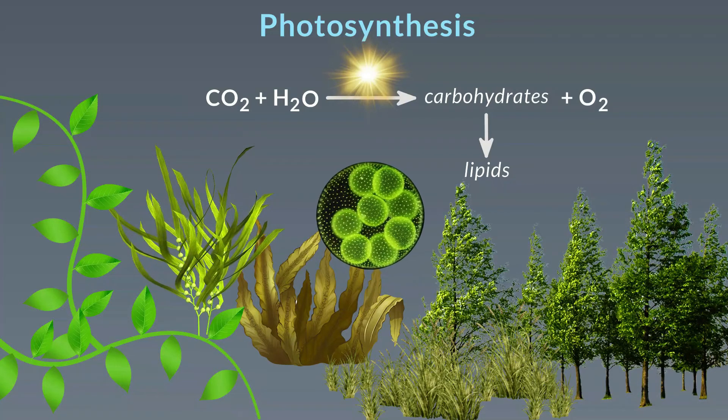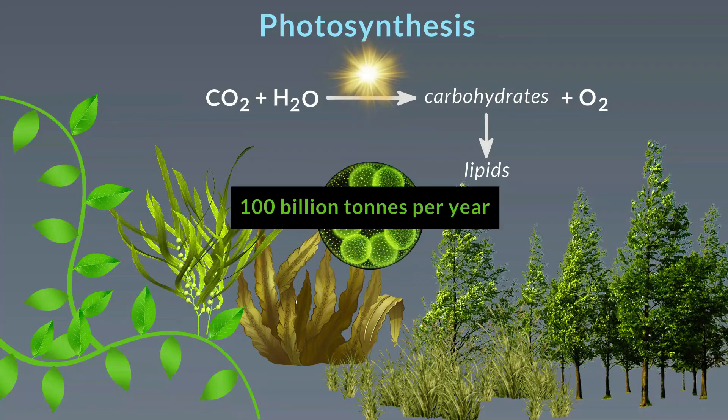Plants, trees, algae, and cyanobacteria have evolved over billions of years the molecular machinery to carry out photosynthesis. So why don't we let the plants do what they do best and take on the heavy lifting of converting this greenhouse gas to useful fuels?